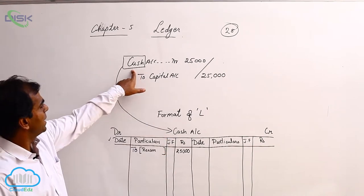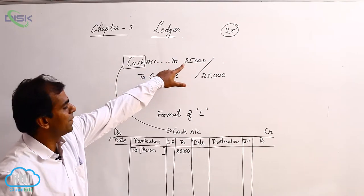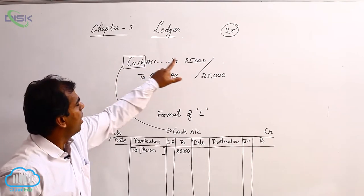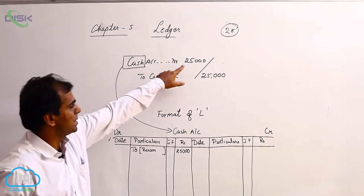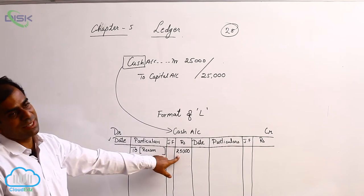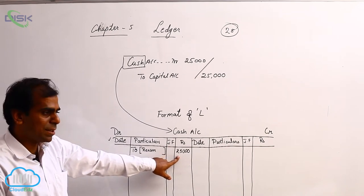In this journal entry, cash account debit 25,000. So, what amount that is there against cash in the journal entry only will come on the debit side of this cash account.